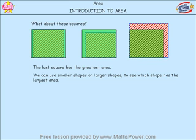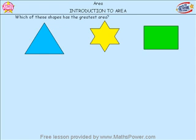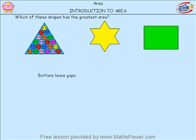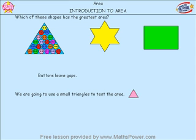Another way we could compare area is by placing smaller shapes on the larger shapes to see which shape has the greatest area. Which of these shapes has the greatest area? Have a good look at them. We could place squares over the top, but it might be a bit tricky, especially on the star. We can use anything to cover them — I could even use something like buttons. However, it wouldn't cover all the shape because round buttons would leave gaps. So I'm going to use small triangles to test the area of each of these shapes.